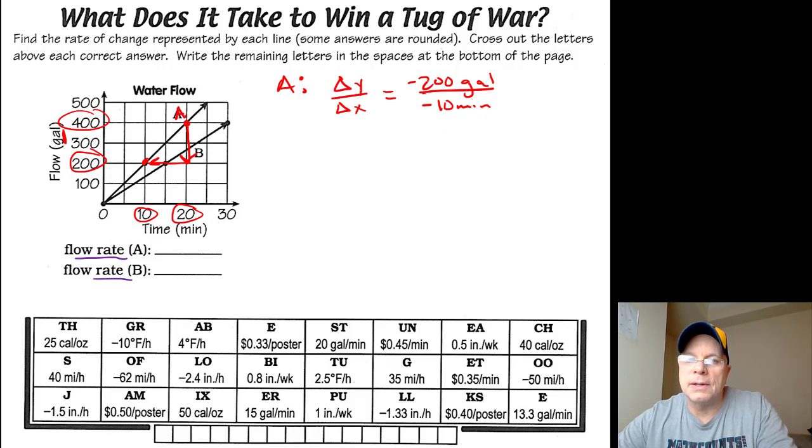200 divided by 10 is 20, and a negative divided by negative is a positive. So this is positive 20 gallons per minute.